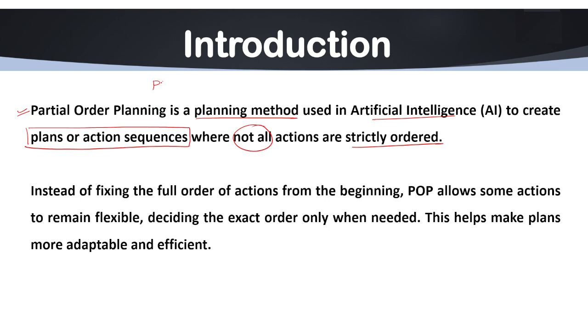Simply we can say POP is like a to-do list where only some tasks must be done in a fixed order. It is useful in AI for building flexible and intelligent agents that can handle all the real world uncertainty.